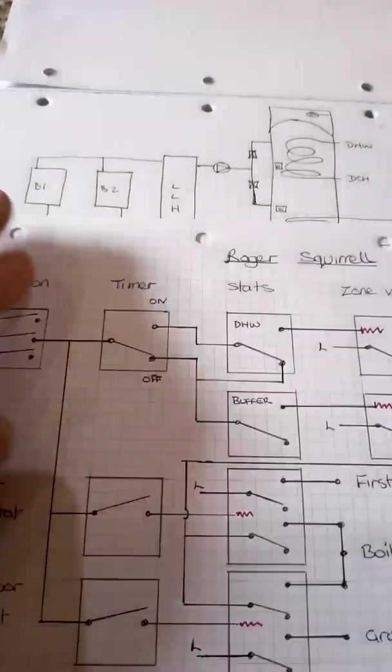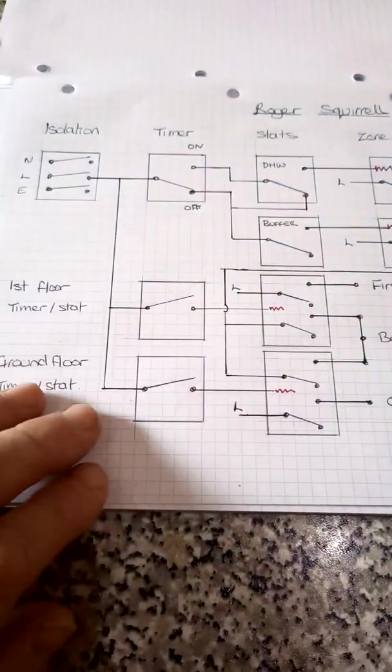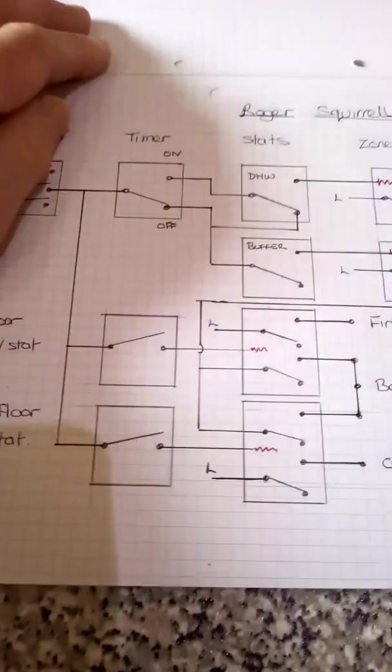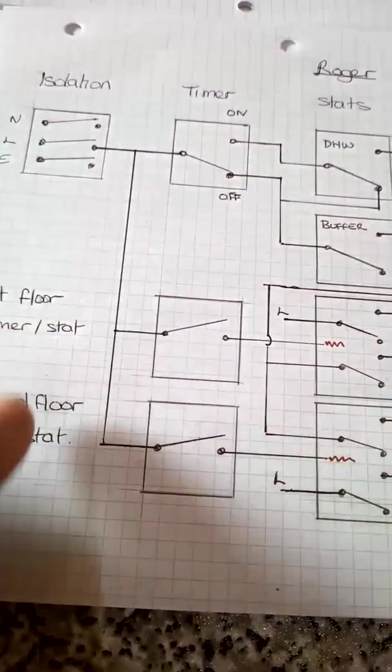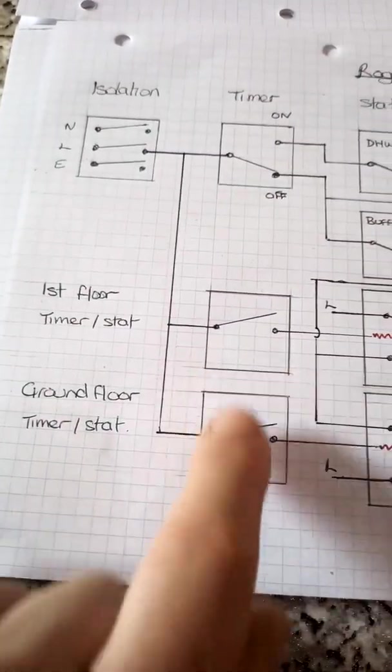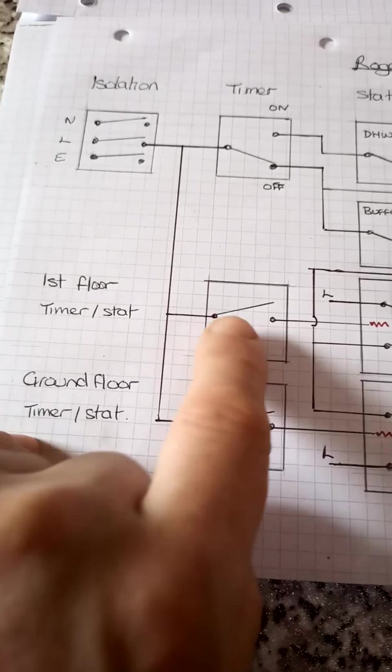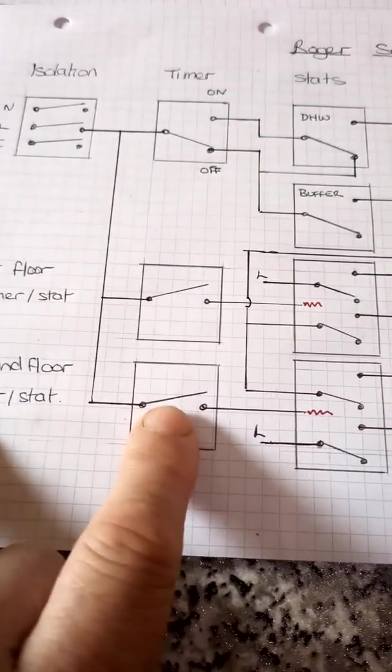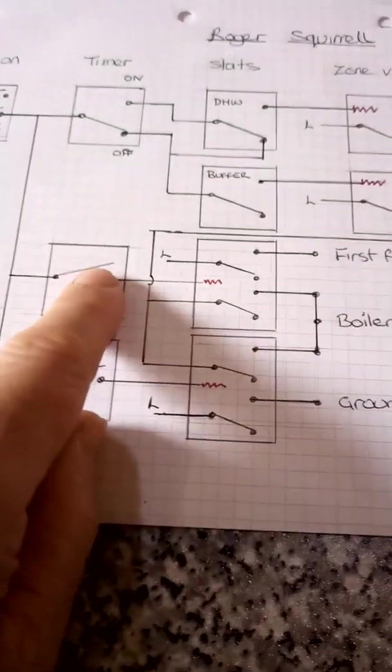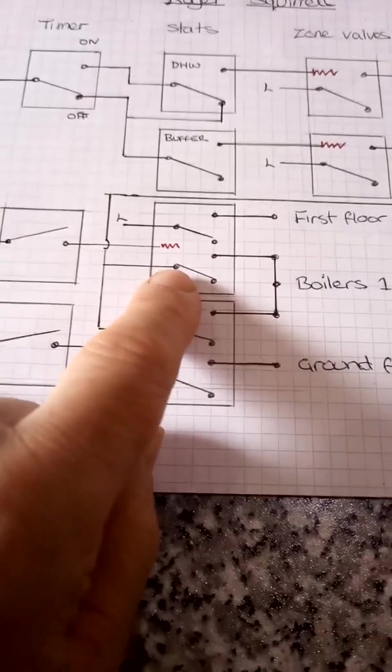So if we go through to the schematic, we've got the timer control. We've got a live supply down to our first floor and ground floor timer stats. So these are programmable room stats. I'll go through this part first, actually. These simply latch across these relays.